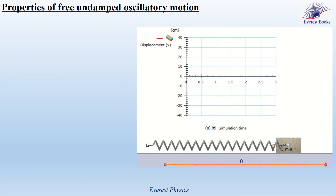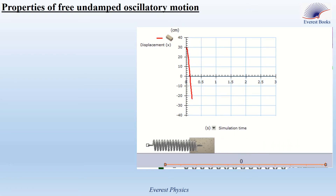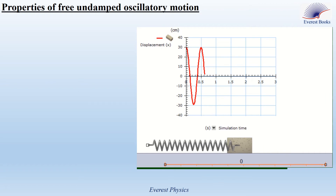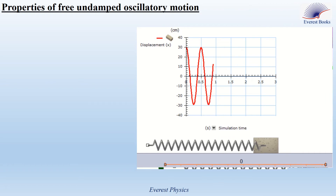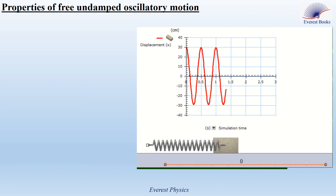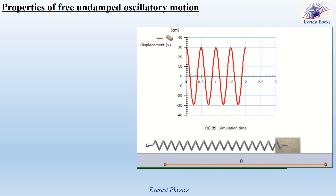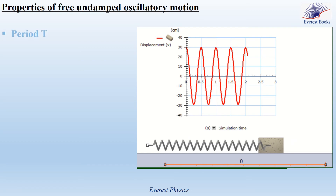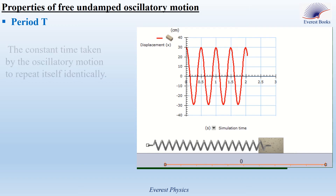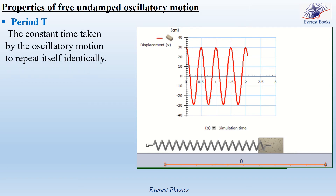Now let's move to the properties of the free undamped oscillatory motion. Consider this horizontal elastic pendulum, which oscillates about its equilibrium position. The vertical axis in the graph represents the abscissa of the center of mass of the block in centimeters, and the horizontal axis represents the time in seconds. The first property is the period, which is the constant time taken by the oscillatory motion to repeat itself identically. In the figure, the period is 0.5 seconds.